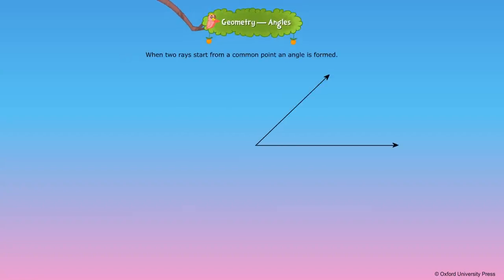When two rays start from a common point, an angle is formed. In the given figure, rays OA and OB start from O and form an angle AOB, written as angle AOB. Angle AOB can also be written as angle BOA or angle O.